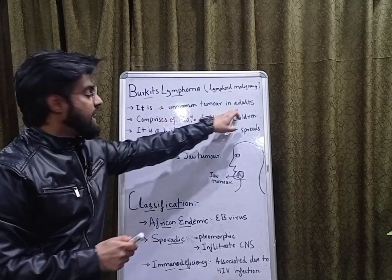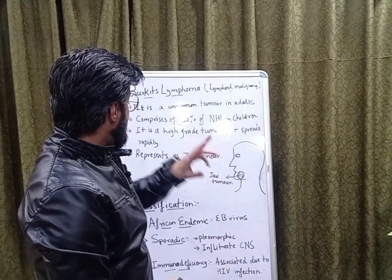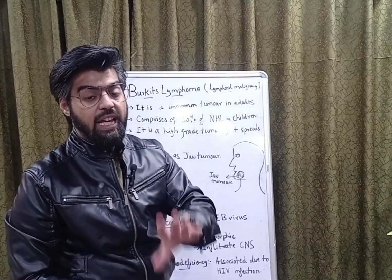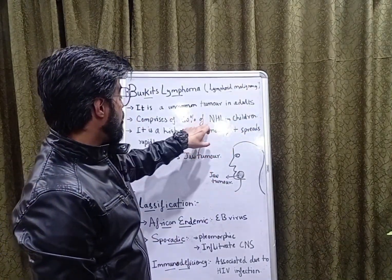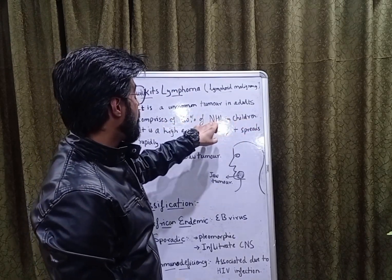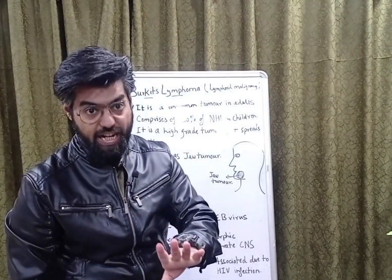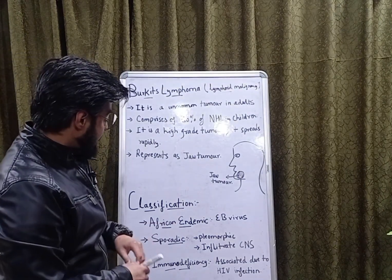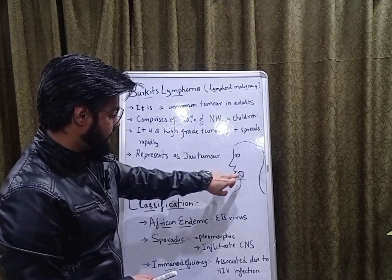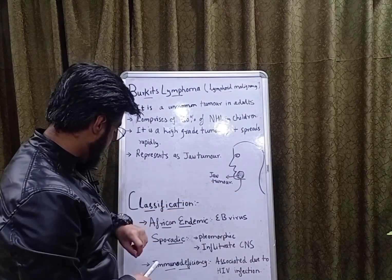It is a very uncommon tumor in adults. However, it comprises 30 percent of non-Hodgkin's lymphoma cases in children. It is a high grade tumor and it spreads very rapidly. In the beginning, it presents as a jaw tumor in children.